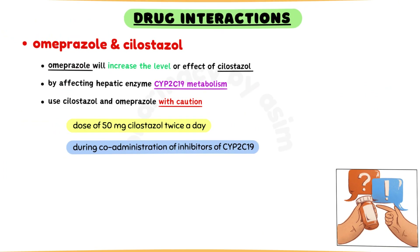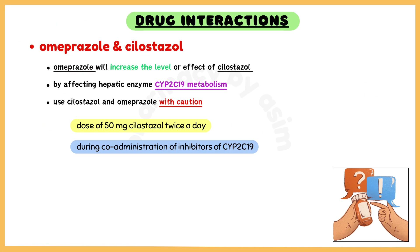Regarding drug interaction, omeprazole will increase the level or effect of cilostazole by affecting hepatic enzyme CYP2C19 metabolism. Therefore, use cilostazole and omeprazole with caution. A dose of 50 mg cilostazole twice a day should be considered during co-administration of omeprazole, which is a potent inhibitor of CYP2C19 enzyme.